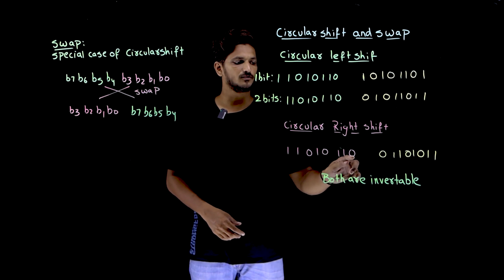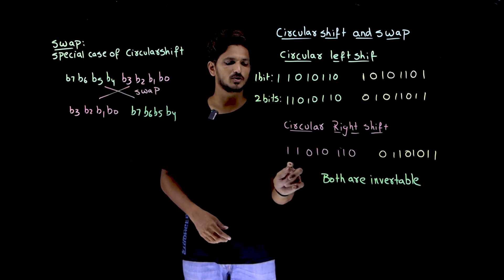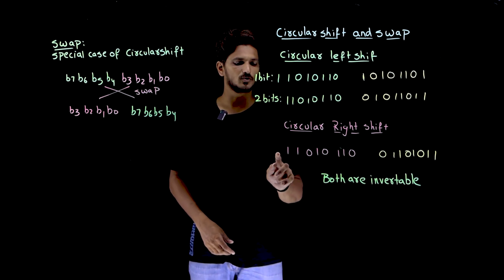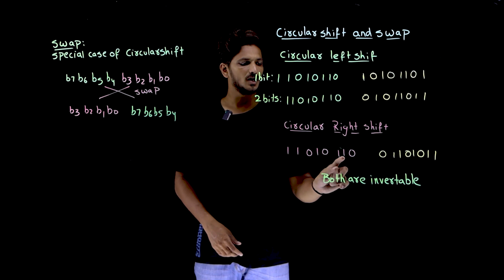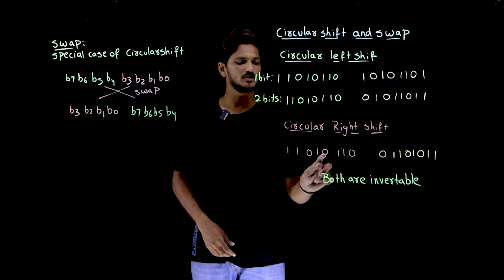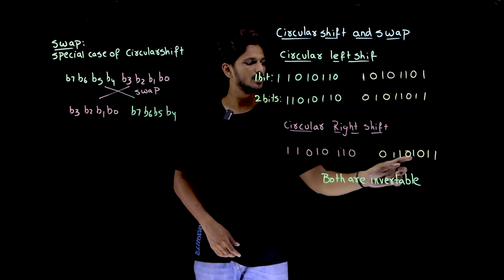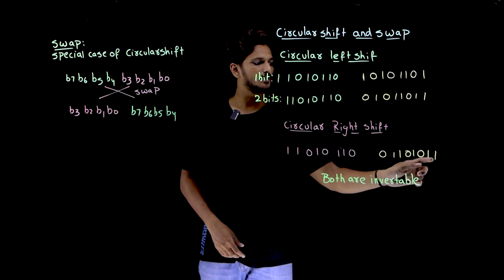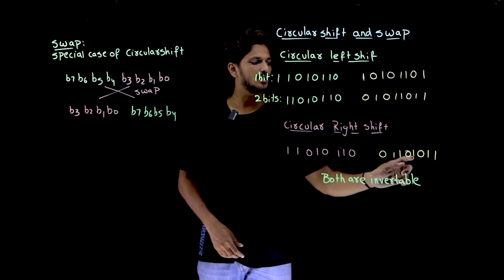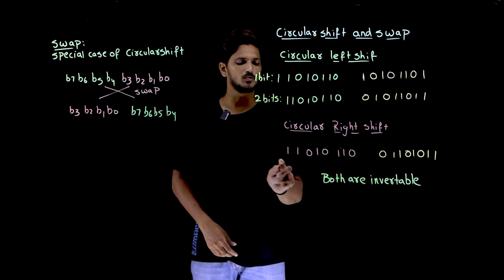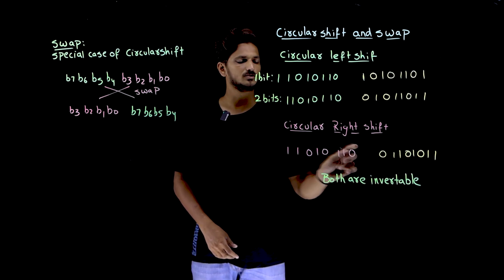So if the first bit is moved to the last position, this is what you are going to get. If 0 is moved to the last position, the output becomes 1, 1, 0, 1, 0, 1, 1, and the first 0 moves to the last position, giving 0 at the end.